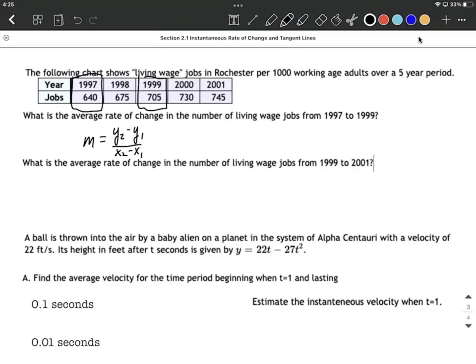As I get going on these, what I like to do is set them up as ordered pairs to begin with. We have an input value of 1997 that goes along with an output of 640 jobs, and a second ordered pair is 1999 with 705 jobs. Treat inputs and outputs like ordered pairs as we go through this.